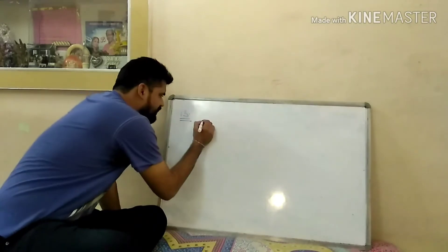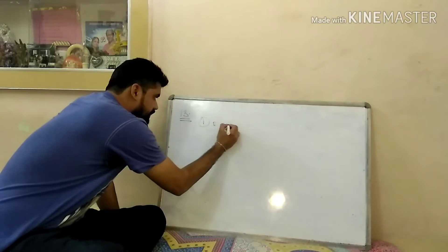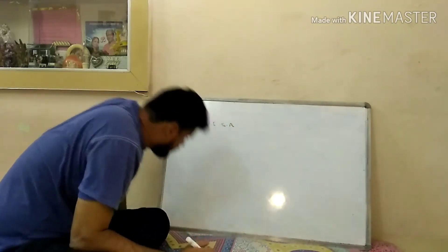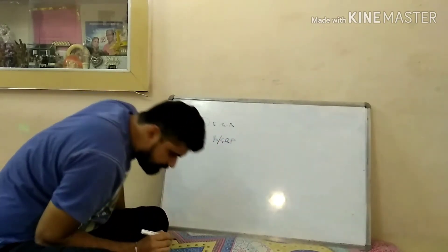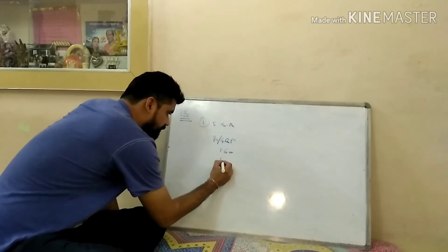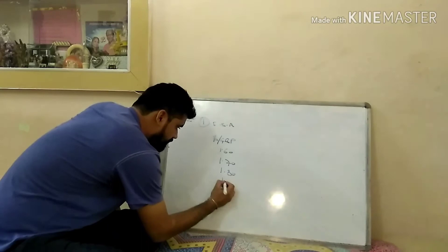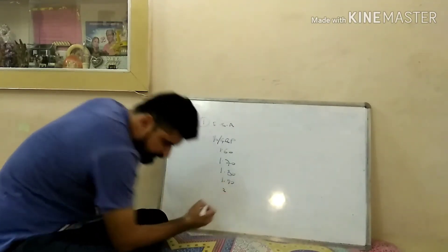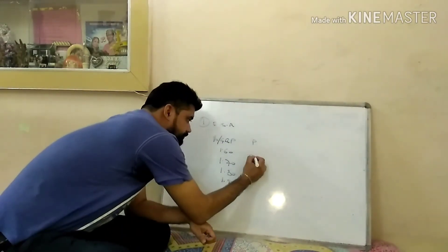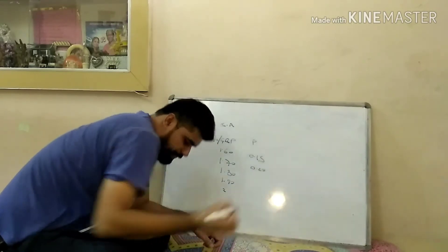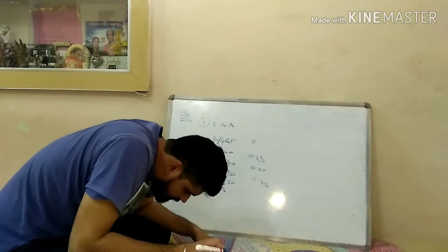So pehle woh calculate karte hain. Simple sa hai, kuch nahi, easy sum hai. Expected spot rate kaise calculate karenge? Sabse pehle rates di rakhai, dollar by pound ka. Kya kya hai rates? 1.60, 1.70, 1.80, 1.90, and 2.0.